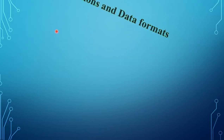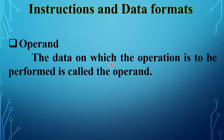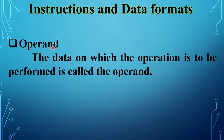The data on which the operation is to be performed is called operand. The operand may be specified in many ways — it may be 8-bit or 16-bit data, name of the registers, or memory address. So the assembly language instruction has two fields: operation code or mnemonics field and operand field. The operation code field always contains an instruction mnemonic; the operand field may contain data, name of the registers, memory address, or it may be empty.